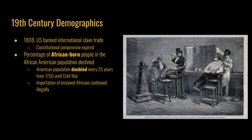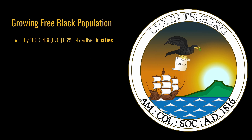After the banning of the international slave trade, there was some illegal importation of enslaved Africans, but it did not significantly increase the population of African Americans in the country. By 1860, 488,000 black people had their freedom living in the United States, and almost half of them lived in cities — at a higher incidence than the rest of the U.S. population.